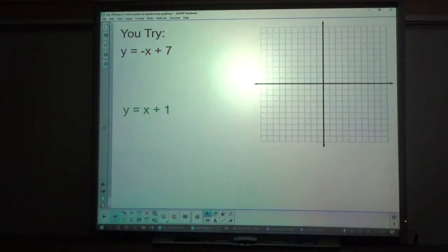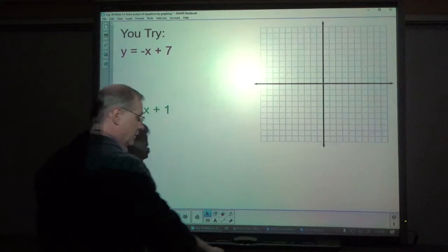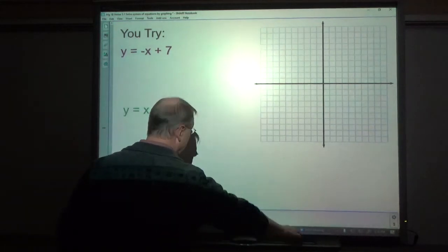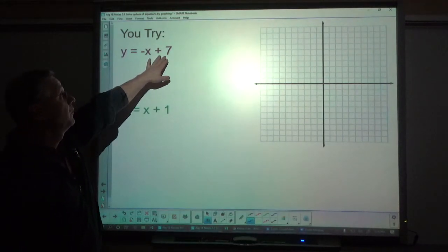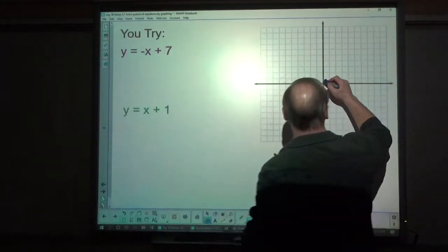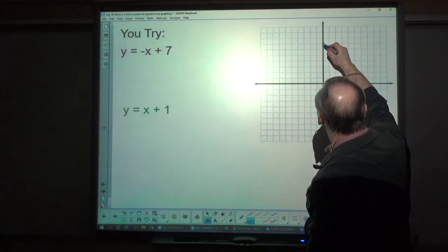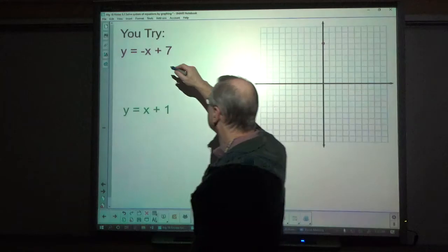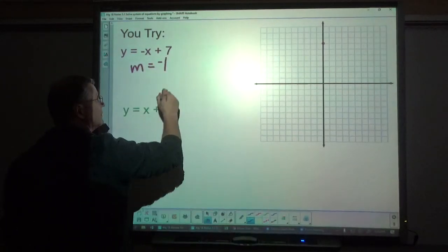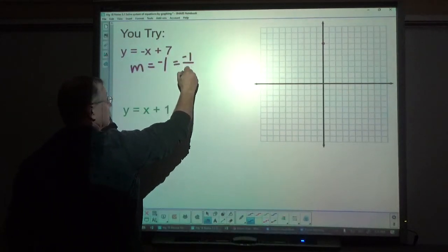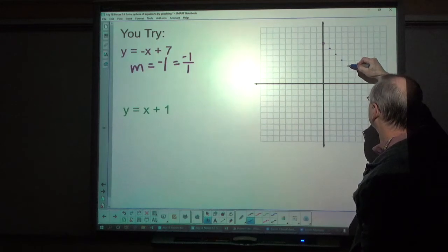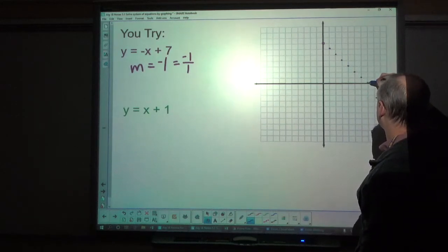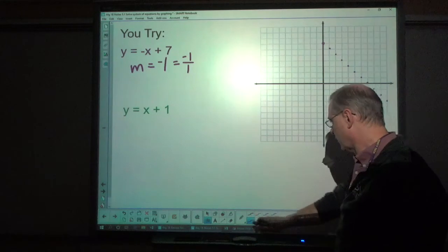You give this one a try, and as soon as you're done, unpause and you can see if you got it right. Alright, in this first equation, I am going to plot the y-intercept of 7: 1, 2, 3, 4, 5, 6, 7. And every time I go, now slope here is negative 1, so that's like negative 1 over 1. Every time I go down 1 to the right 1. I can do that all day long. Alright, draw that line.